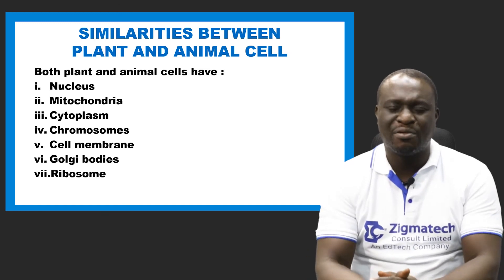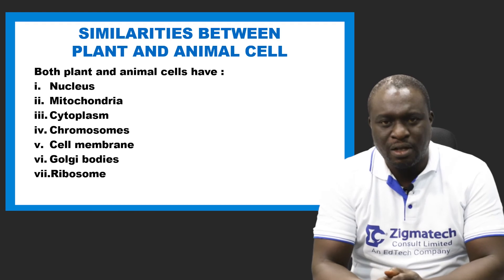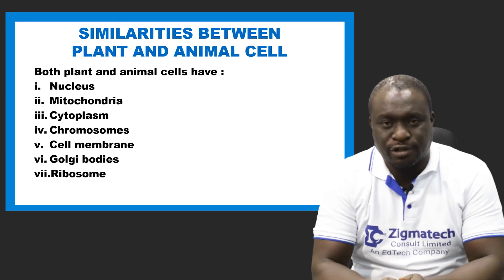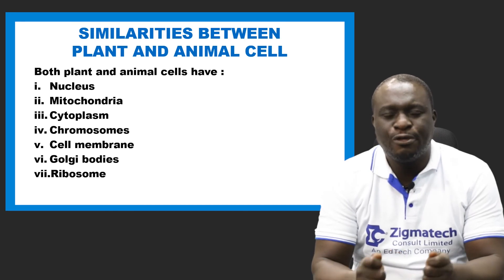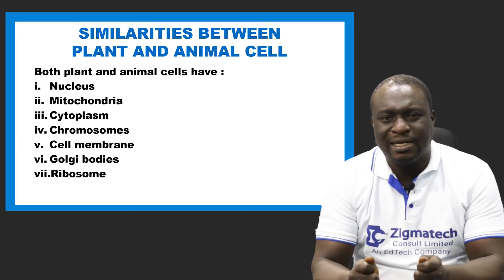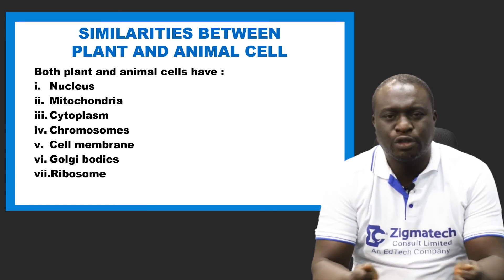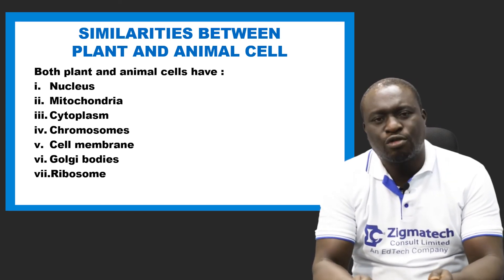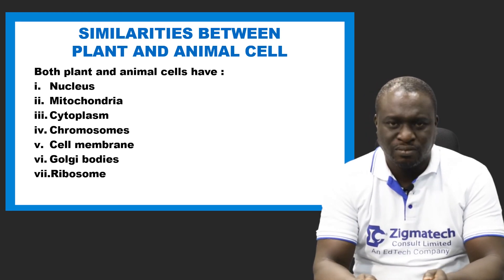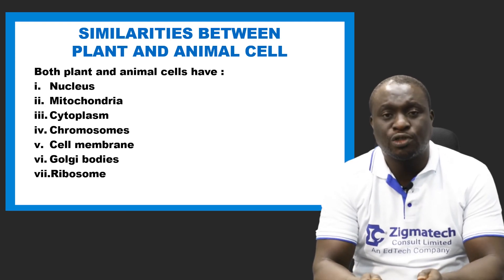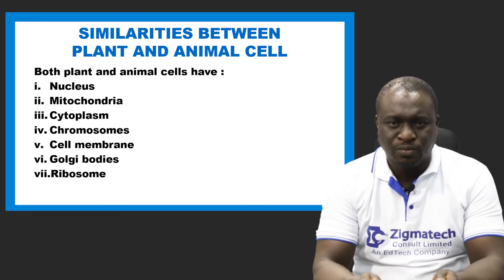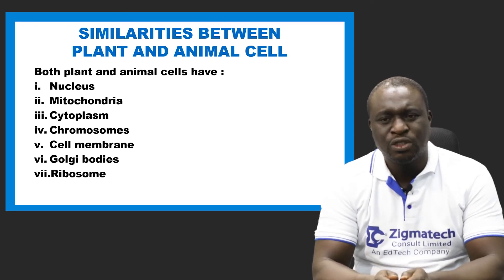Now let's look at similarities between plant and animal cells. Both plant and animal cells have a nucleus, mitochondria, cytoplasm, chromosomes, cell membrane, Golgi bodies, and ribosomes. You can verify this by comparing the two cell structure diagrams.